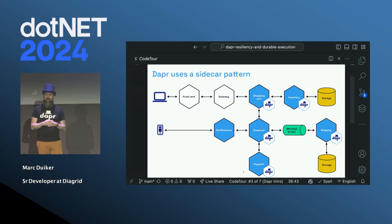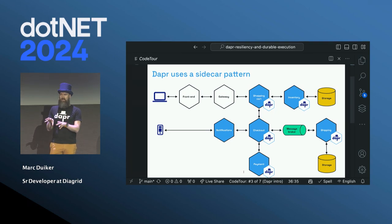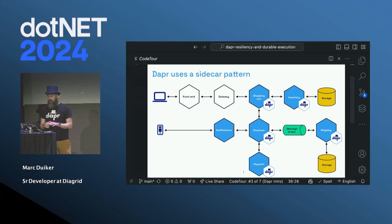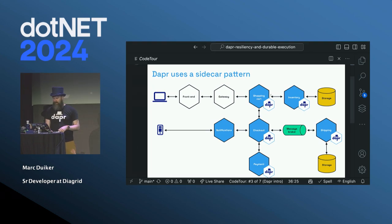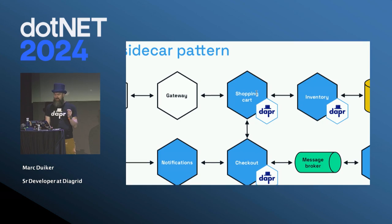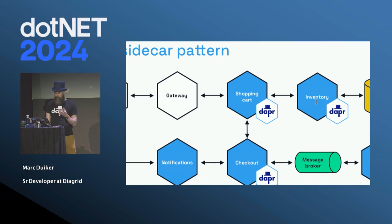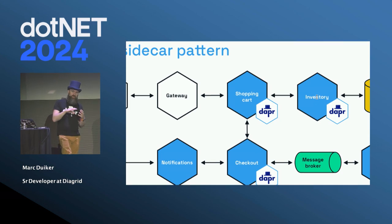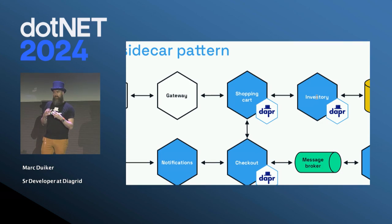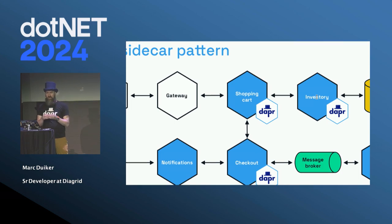Dapr takes care of all of the communication in your microservice architecture. When you want to make a service call from shopping cart to inventory, you don't make a direct call — your communication goes via the Dapr sidecar, which finds out where the other service lives and makes the call through the other Dapr sidecar, which then forwards it to inventory. Because all communication goes through the sidecar, Dapr can track everything — it's ideal for observability. You also have one place to configure security and resiliency.